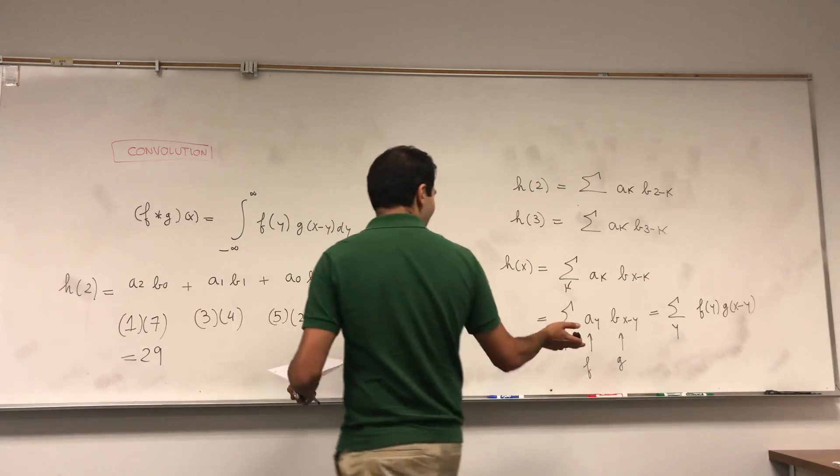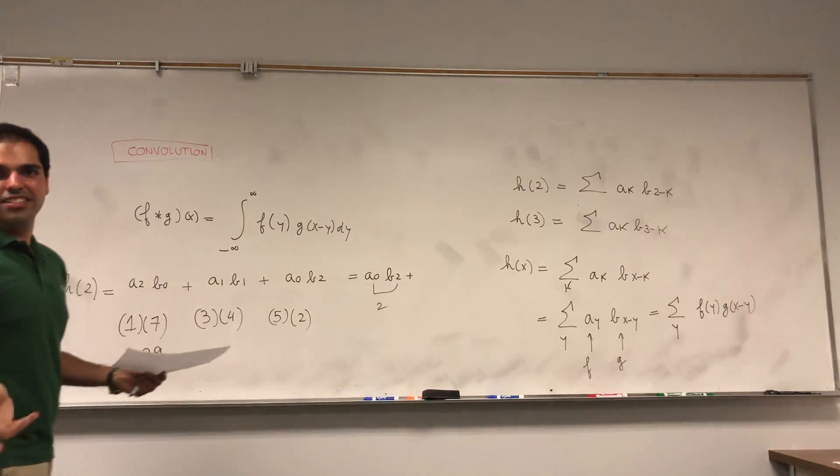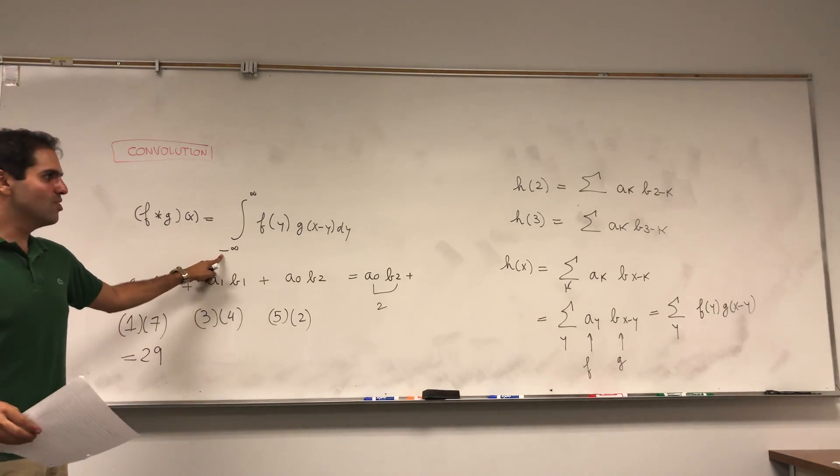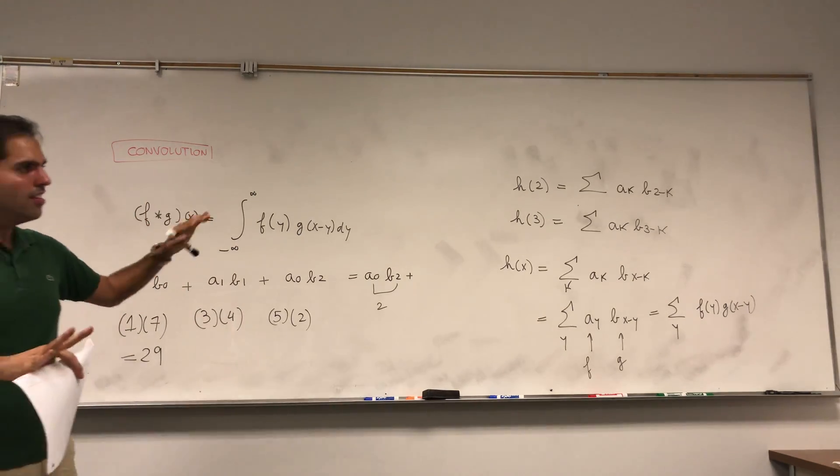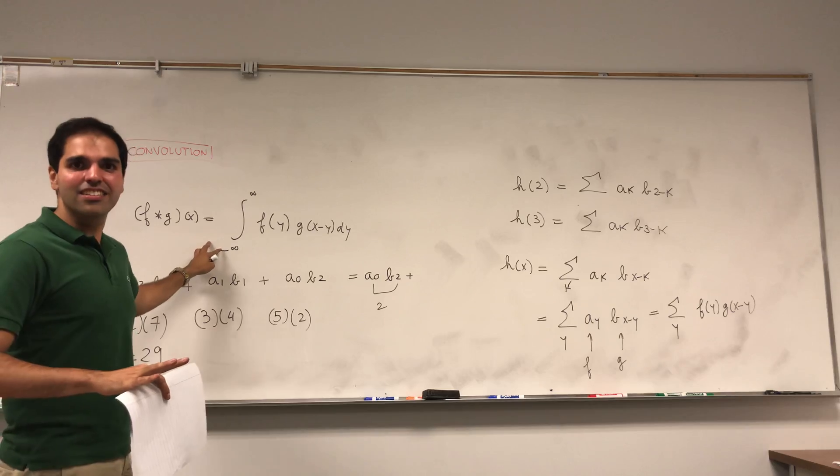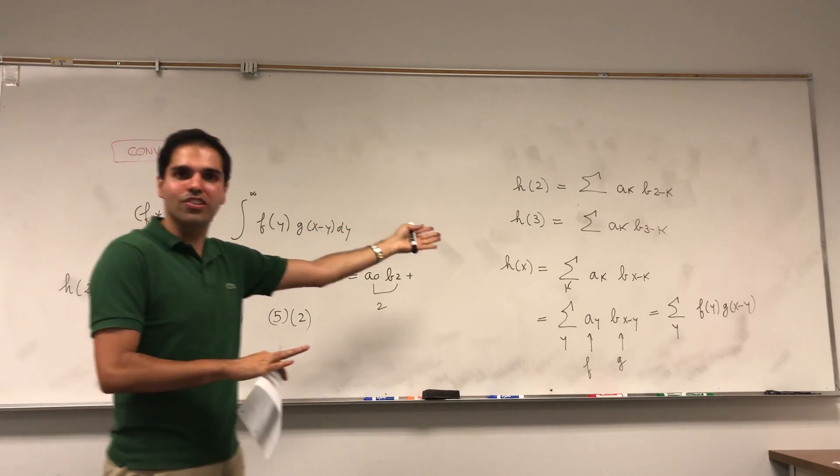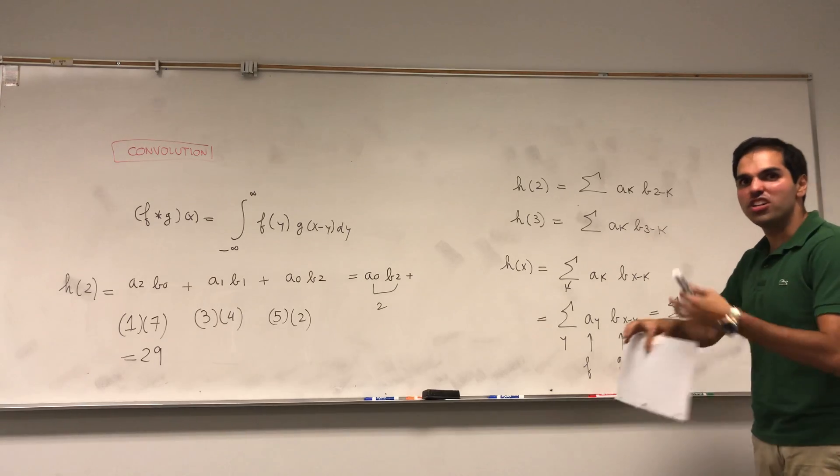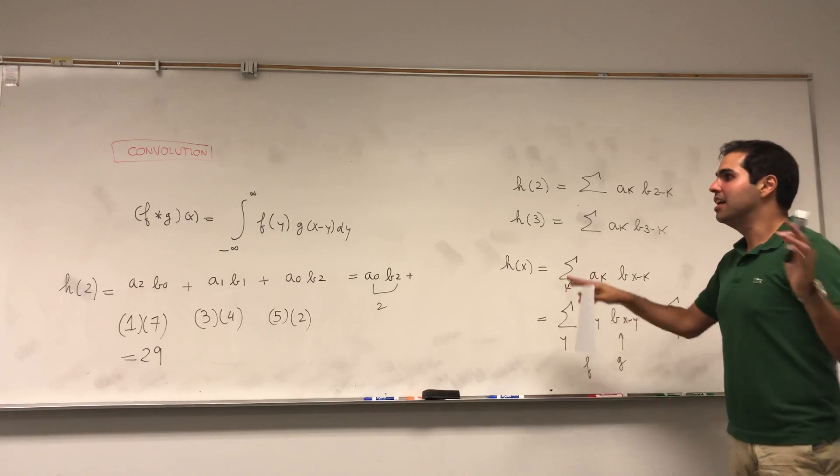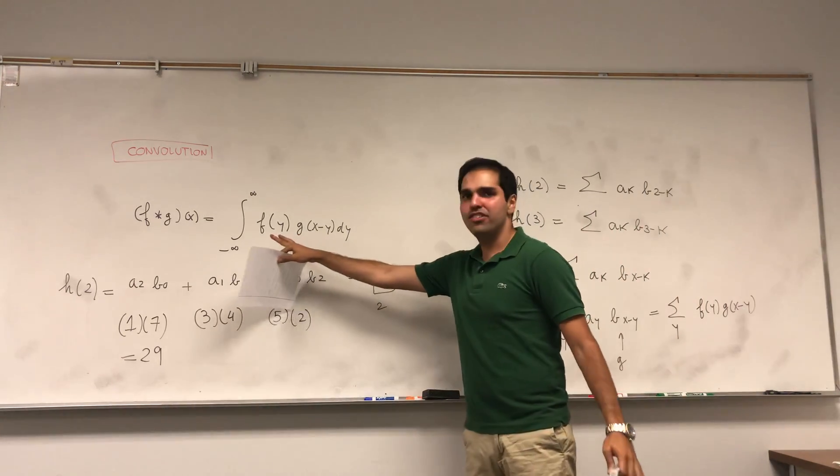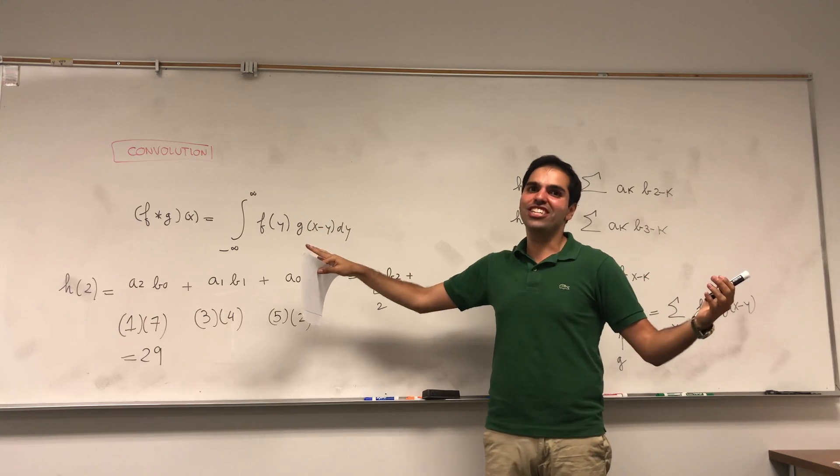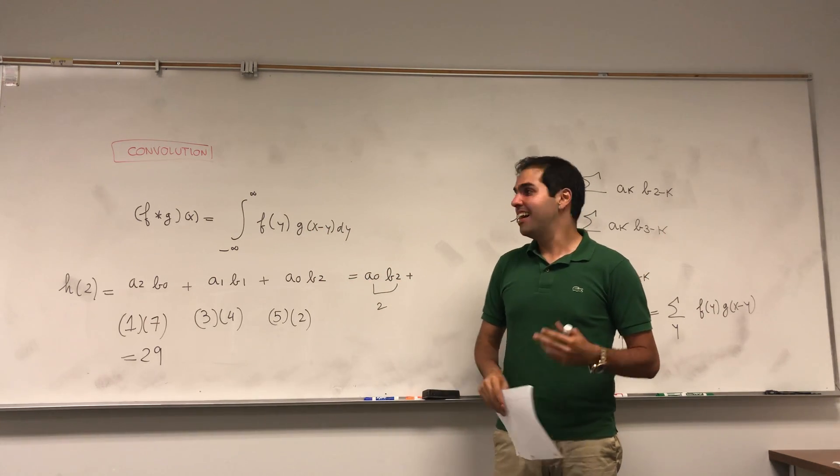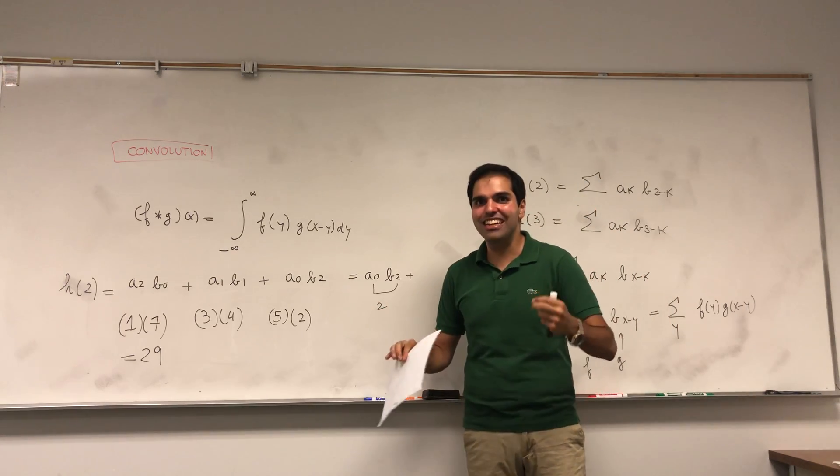And lo and behold, instead of using a sum in the continuous version, you're using an integral. So really, what the convolution is is just a continuous version of this process. If you think of f and g as like continuous polynomials, the convolution gives you the x coefficient in the multiplication of f by g, and that's why it's really a multiplication.